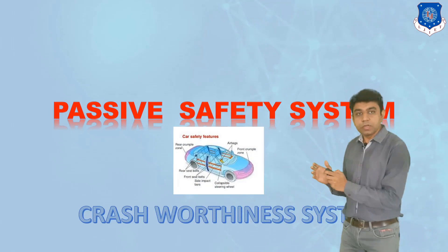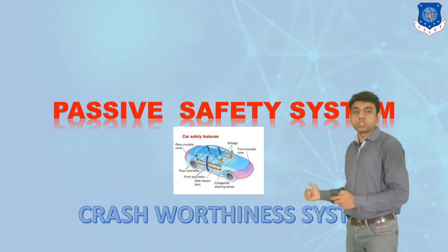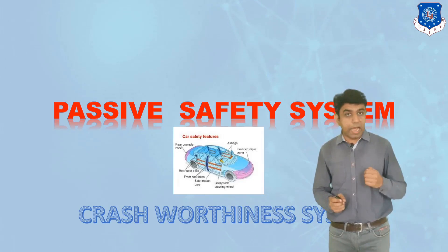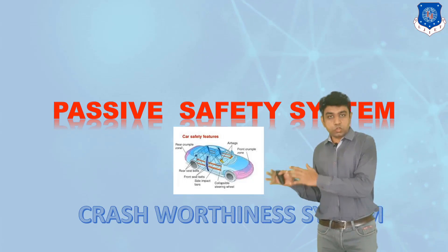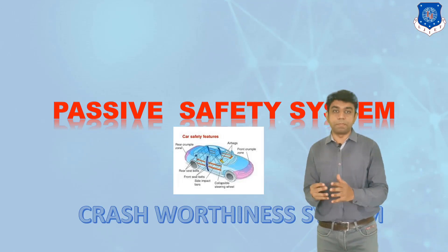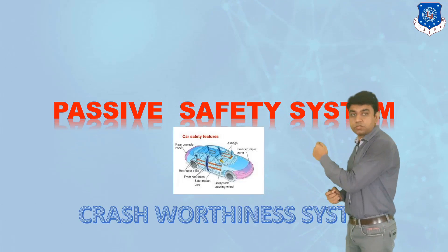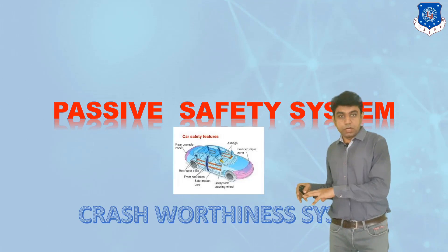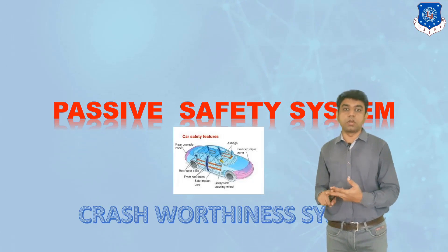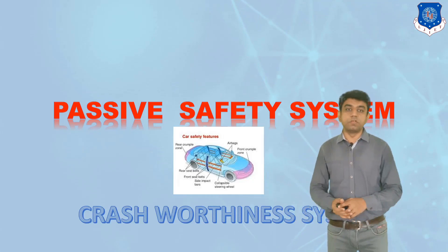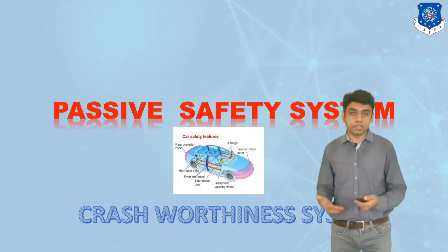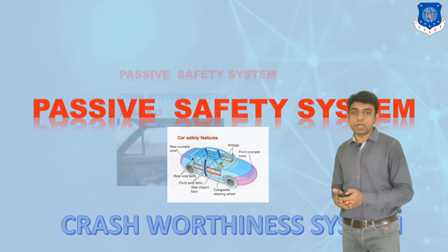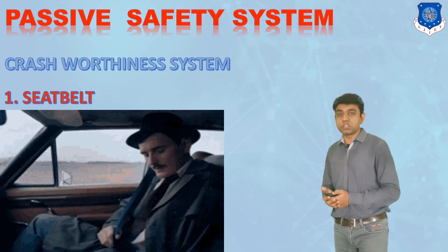Before going into depth of the passive safety system, we need to understand that this system is also called a crashworthiness system, because the major role of the passive safety system is to minimize the loss which occurs after an accident. The active safety system plays a role to avoid the accident, but once we are not in a position to avoid it, the passive safety system will try to minimize the loss to the automobile or to any occupant — whether it is the driver, co-driver, or passenger in the rear seats.